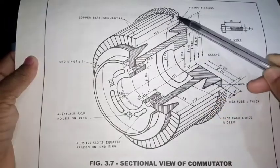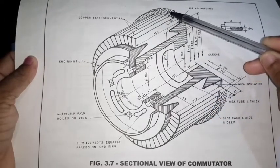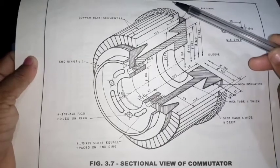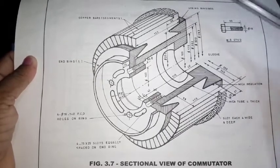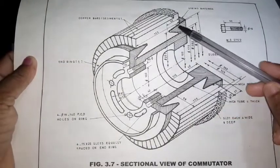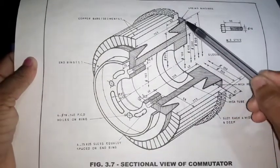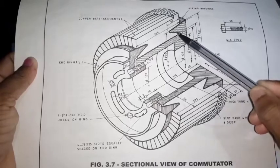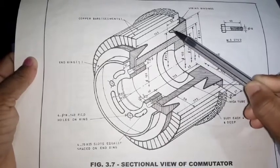This portion is known as the riser. There are slots provided on the riser, which are used to connect the commutator to the armature. This is the wedge-shaped copper segment, and this portion is the mica coating.